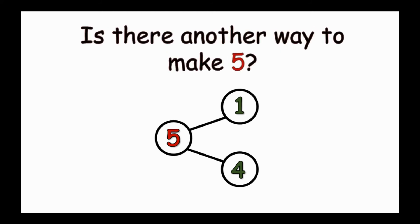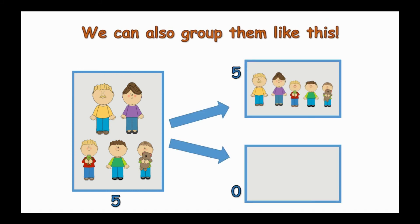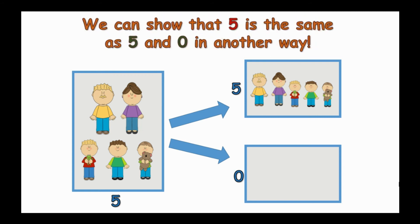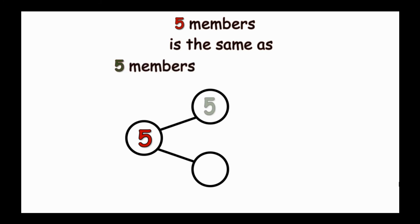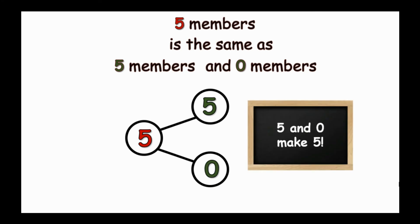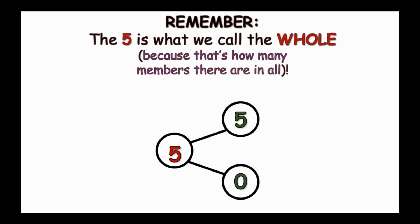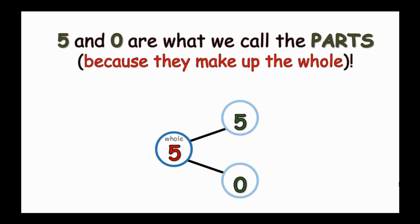Is there another way to make five? Can you think of another way to group the Gruz family? We can also group them like this. Five members is the same as five members and zero members. We can show that five is the same as five and zero in another way. Five and zero make five. This time, we made five using five and zero. Remember that five is what we call the whole because that's how many members there are in all. And five and zero are what we call the parts because they make up the whole.